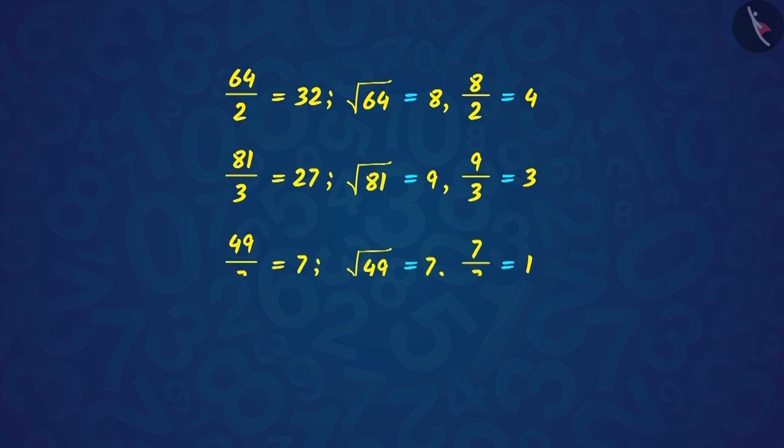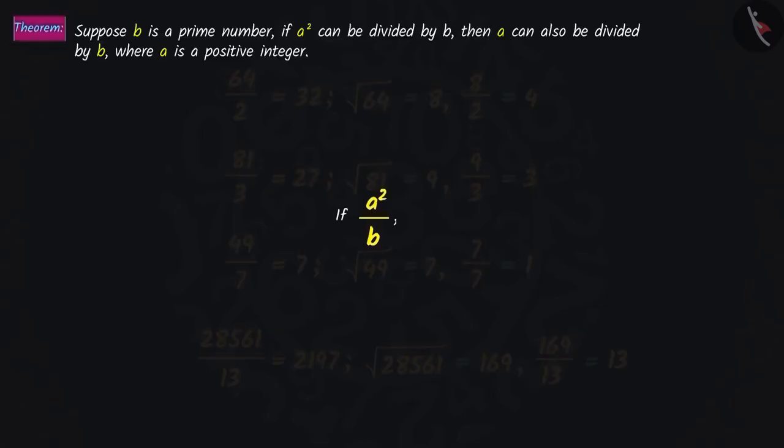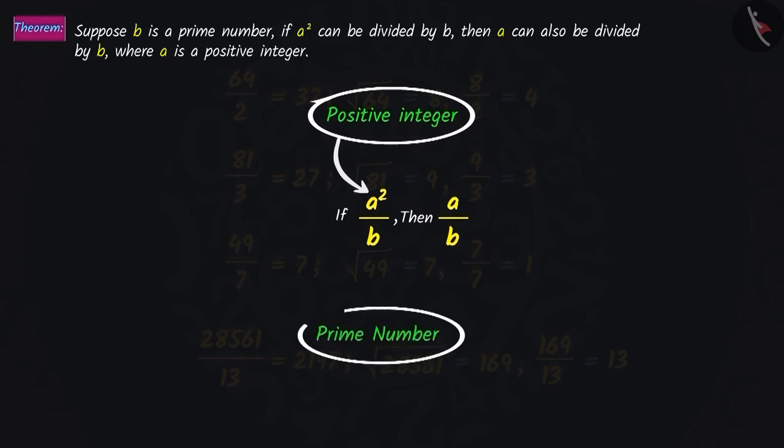If we continue to do the same with other numbers, what do you observe? Based on these examples, we can say that for a positive integer A, if the power of A is 2 and it is divisible by any prime number, say B, then the number A will also be divisible by B.